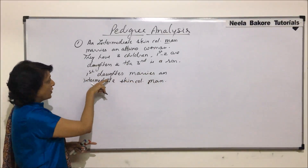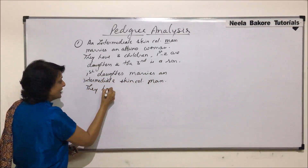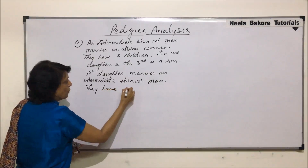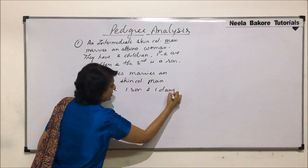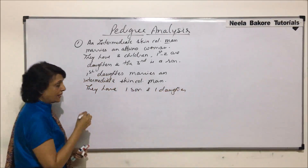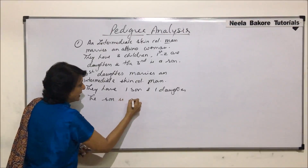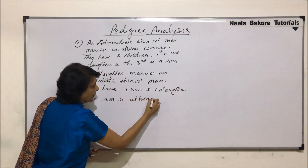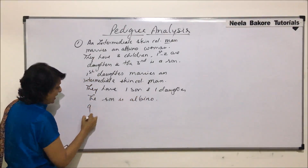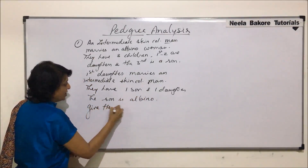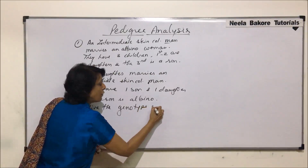Now we are talking about this generation. They have one son and one daughter. The son is albino. The question is: give the genotype of all.